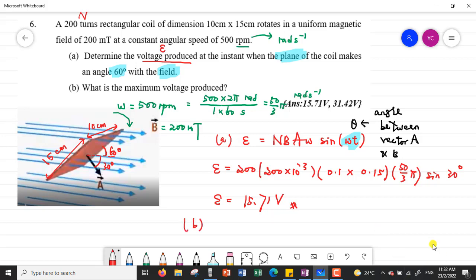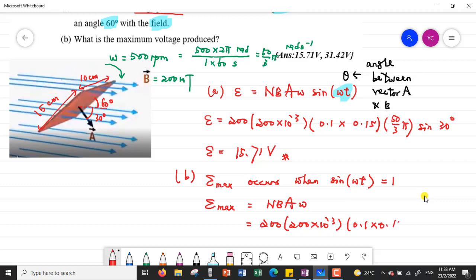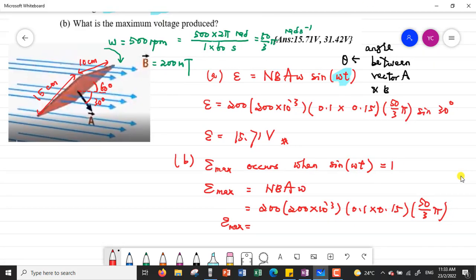What is the maximum voltage produced? We understand maximum EMF occurs when the value of sin(ωt) equals 1, because the maximum value for sine is equal to 1. So the EMF maximum will be NBAω. Then we put in the values. We might pause the video to do the calculations. If you calculate correctly, you should get the value should be 31.42 V.